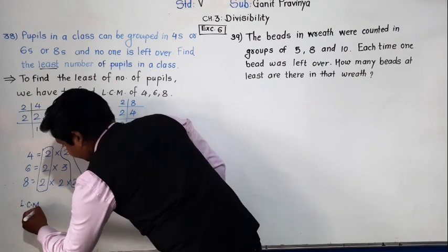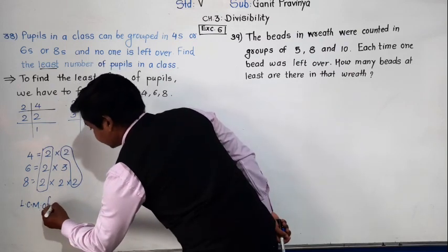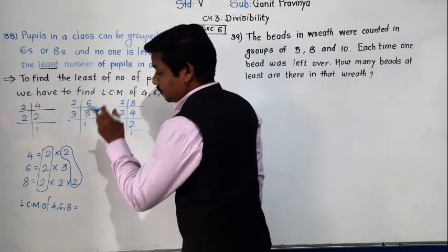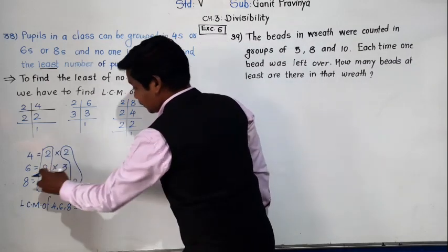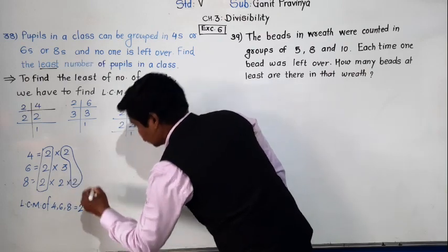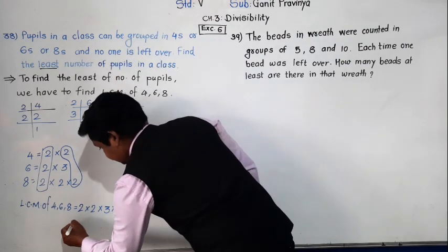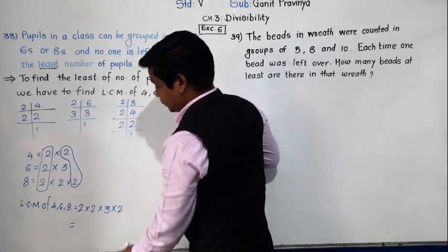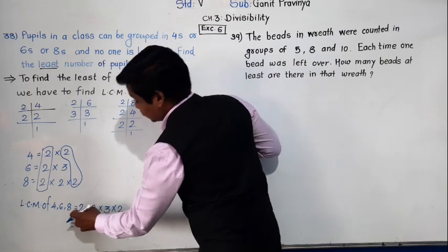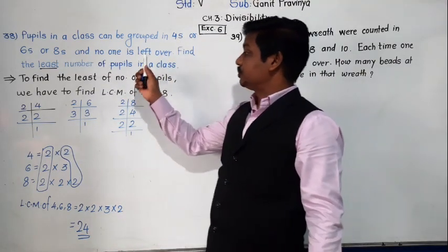LCM is equal to the product of common as well as non-common factors. LCM of 4, 6 and 8 is the product of common factors 2 × 2, multiplied by non-common factors 3 and 2. So: 2 × 3 = 6, 6 × 2 = 12, 12 × 2 = 24. So 24 is the least number of pupils in the class.